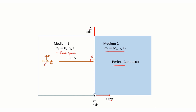Let us assume the incident wave has EI and HI. Nothing is going to be transmitted because the perfect conductor has conductivity as infinity. So nothing is going to be transmitted; whatever comes in, the entire thing will be reflected back. Let us assume this wave was EI and HI.